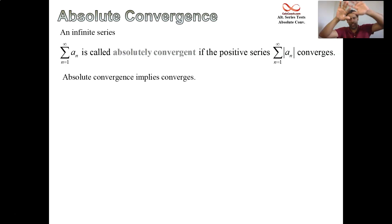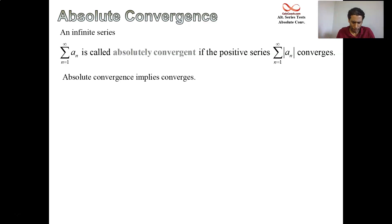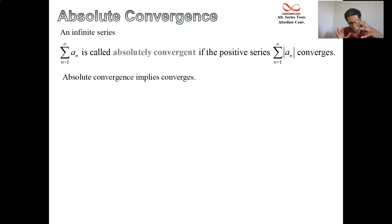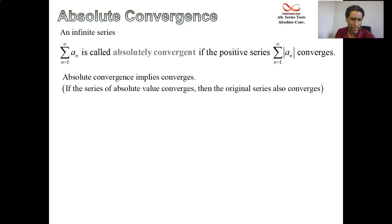There's this umbrella of convergence, and inside of there there are different categories: absolute convergence versus conditional convergence. If you're absolutely convergent, you're definitely convergent. What we're saying is that there's this stronger type of convergence called absolute convergence. If the series of absolute values converges, then the original series also converges.